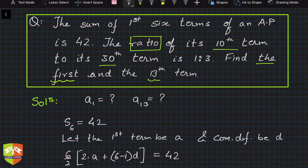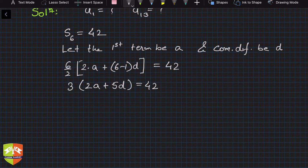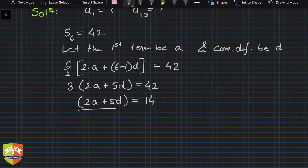So that means 3 into 2a plus 5d is equal to 42, right. So you can cancel this 3 out and you will get 2a plus 5d is equal to 14. This is equation number one.